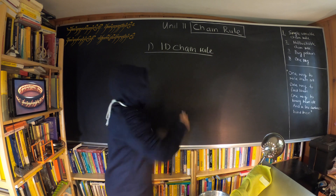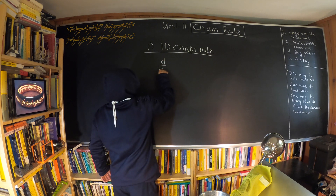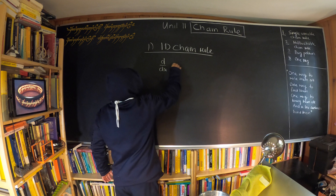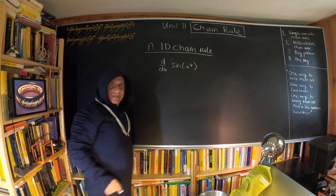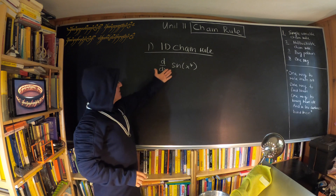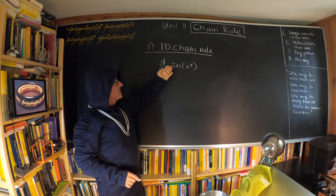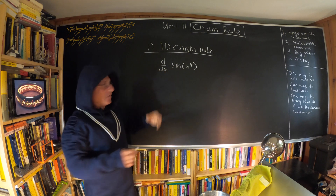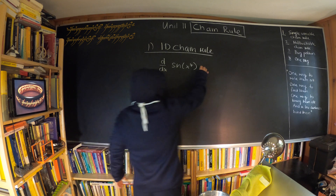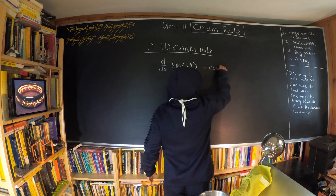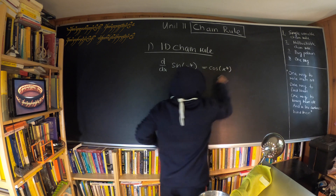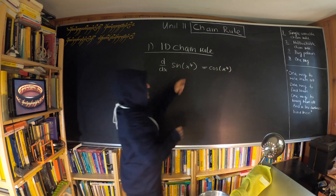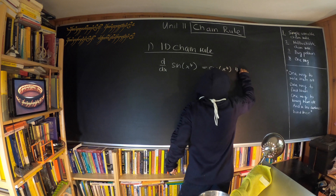You're all familiar with that. For example, d/dx of sine of x to the fourth — this is a composition of two functions. We take the derivative of the outer function, which is cosine of x to the fourth, and then the derivative of the inner function, which is 4x³.